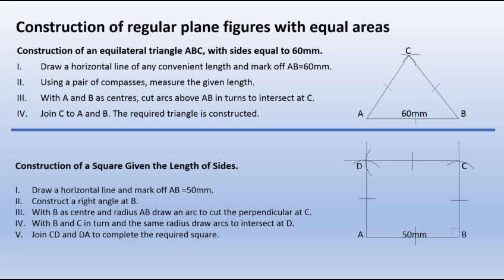Second, let's construct a square given the length of sides. Draw a horizontal line of a convenient length and mark AB to be 50 millimeters. Construct a right angle at B, that is a perpendicular line to AB. With B as center and radius AB, draw an arc to cut the perpendicular line at C. With B and C in turn and the same radius, draw arcs to intersect at D. Join CD and AD to complete the required square. We can also do this for a regular polygon hexagon and likewise our circle, which is very simple.